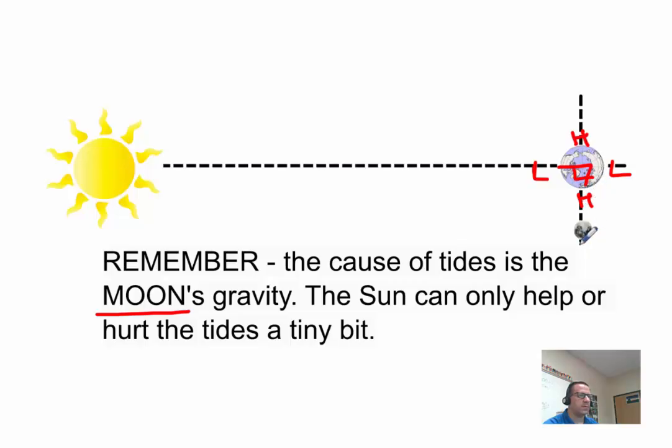So the moon is pulling this way. And the sun is pulling this way. So it's actually helping the low tides a little bit. And it's not helping the high tides.